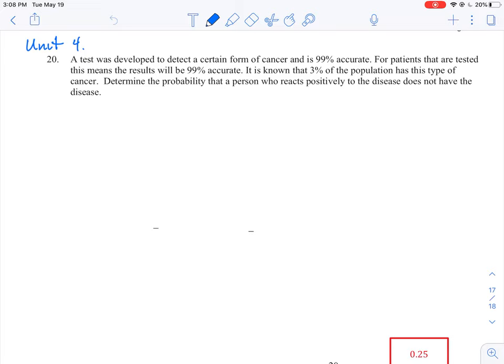So the key statement here is that we're determining the probability of a positive test given that a person does not have the disease.